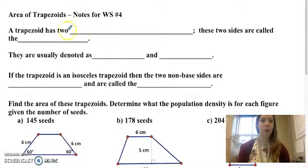All right, we're talking about area of trapezoids today. So a trapezoid has two parallel sides.